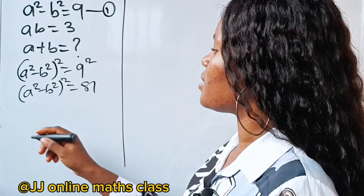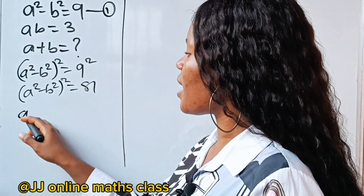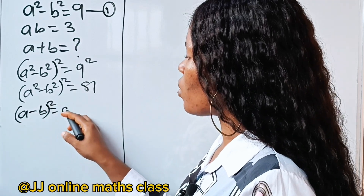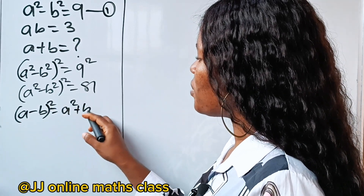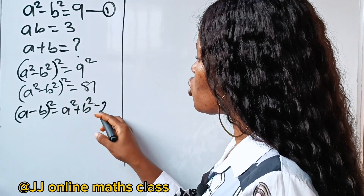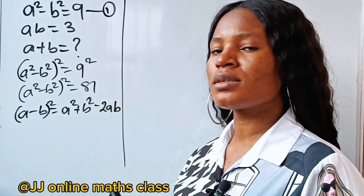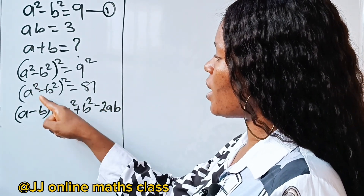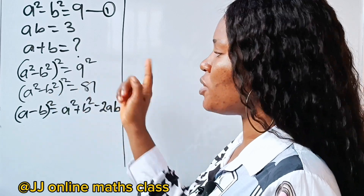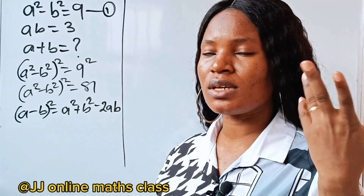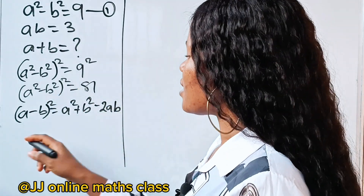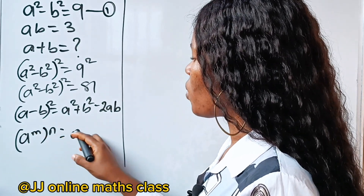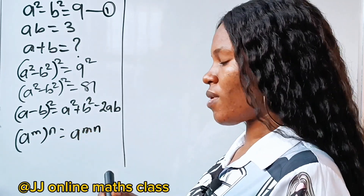There is this algebraic identity that (a minus b) squared is equal to a squared plus b squared minus 2ab. So, it's an identity. Now in this case, our a is a squared and our b is b squared. So let's recall the exponent law that states that a to the power of m raised to the power of n is equal to a to the power of mn.